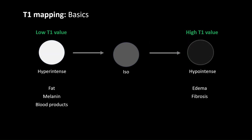Now coming to basics of T1 mapping. If a substance has a low T1 relaxation time, it will be hyperintense on T1 images — examples include fat, melanin, blood products, or proteinaceous contents. Most pathologies in the body are T2 hyperintense and T1 hypointense, meaning they have a high T1 value. Edema and fibrosis, for instance, will have a high T1 value.